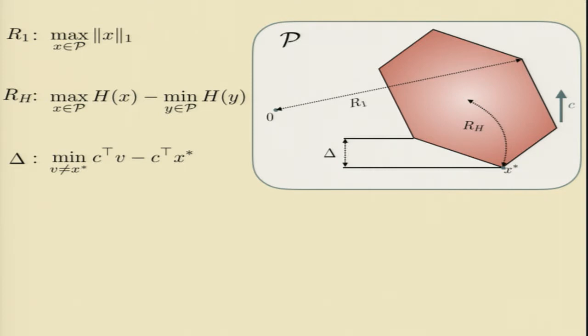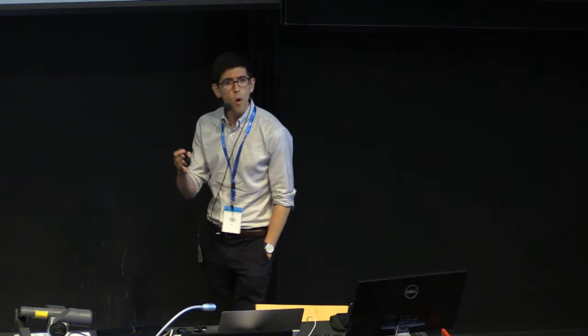which is what I call the suboptimality gap. So this is the gap between what's happening at the optimal vertex and any suboptimal vertex. So I'll tell you a little bit more about this in a second, but if you have these quantities in your hand,